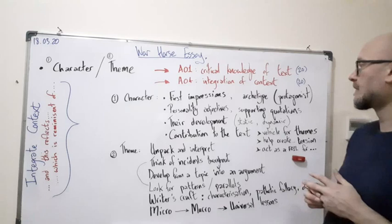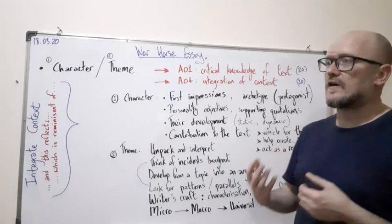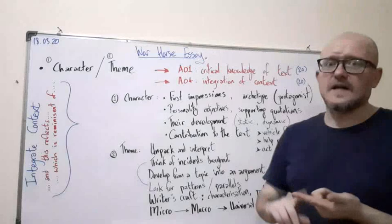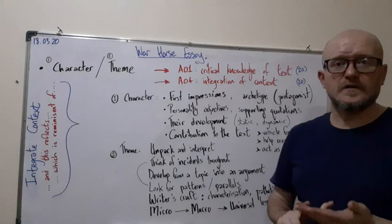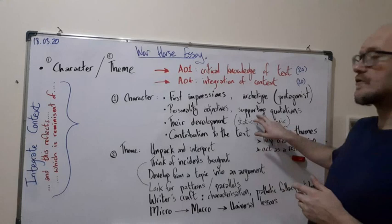Think about that. Then you need to have a good range of personality adjectives. Sticking with Ted Narcott, for example, at the start he's quite rash, he's an alcoholic, he is irresponsible, he is quick to anger. These are many adjectives that you could use when describing a character. But of course, don't just make a point. If you're saying, for example, that he's irresponsible, you need to find quotations to back it up.